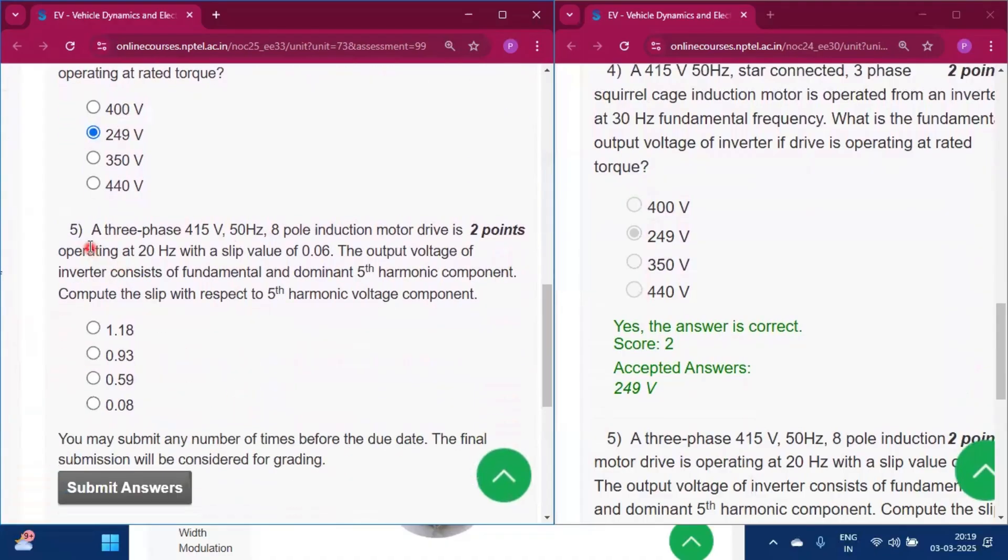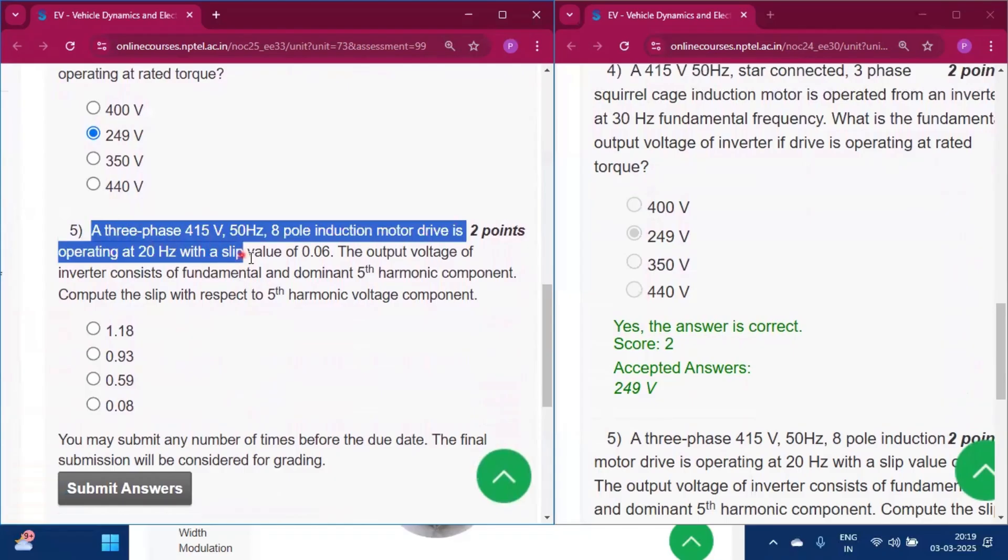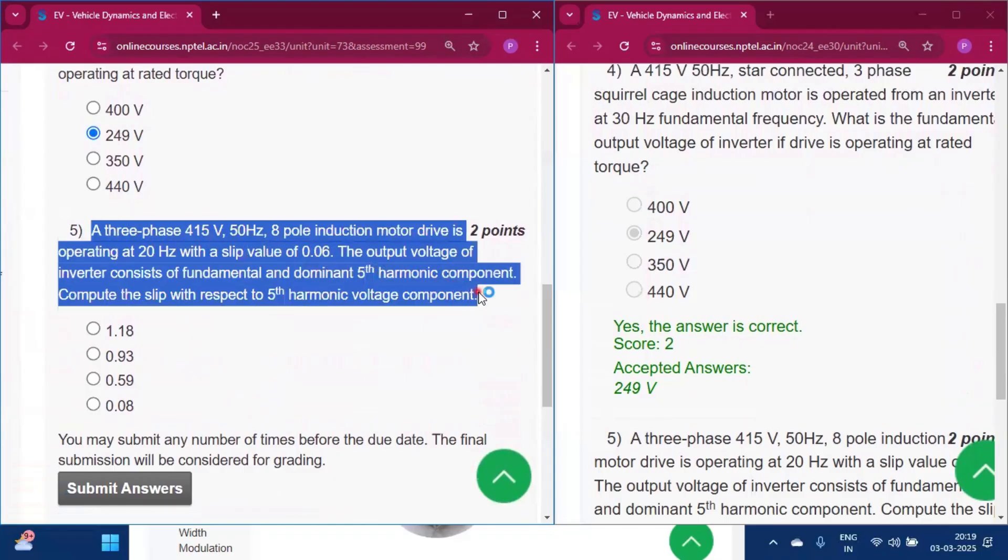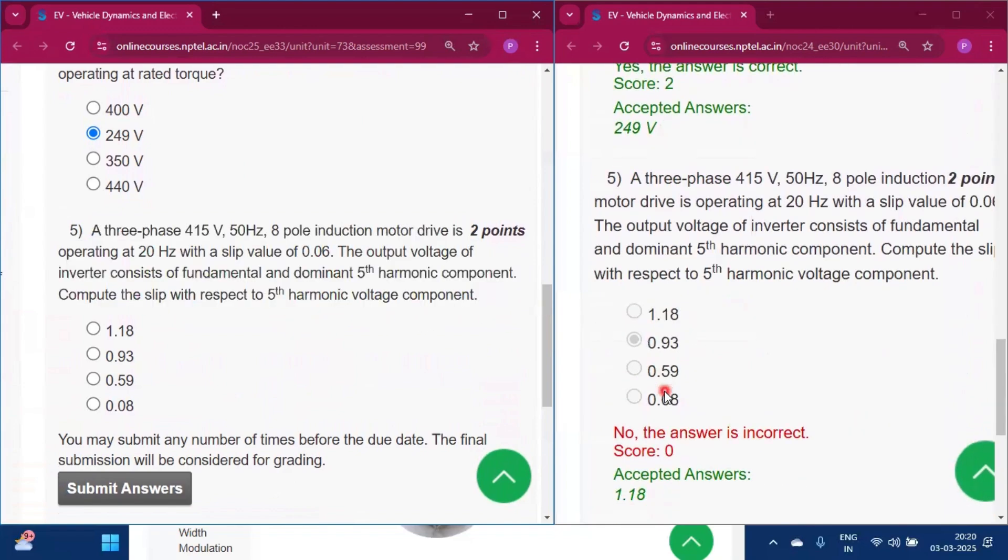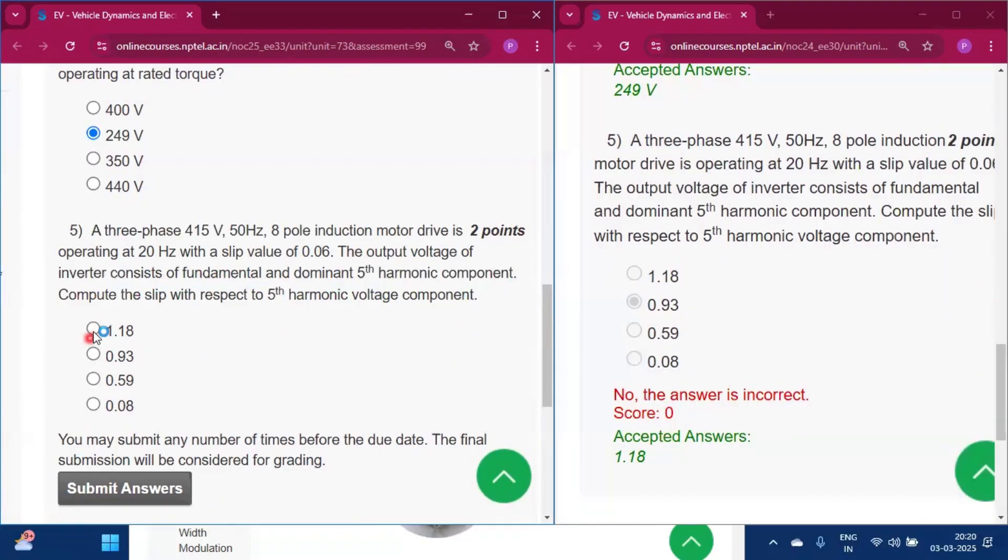Question 5: A 3-phase 415V, 50Hz, 8-pole induction motor drive is operating at 20Hz with a slip value of 0.06. The output voltage of the inverter consists of fundamental and dominant 5th harmonic components. Compute the slip with respect to the 5th harmonic voltage component. The answer is 1.18.